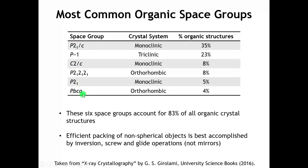Remember, there are 230 space groups total, so we see that organic chemistry boils down to a very strong preference for a relatively small number of space groups. That leads us to the question: what is it that these space groups have in common?